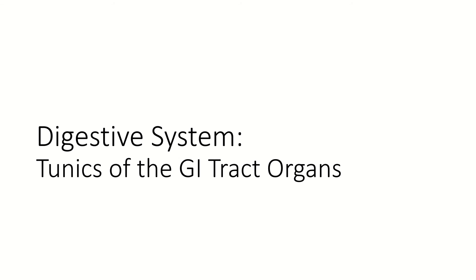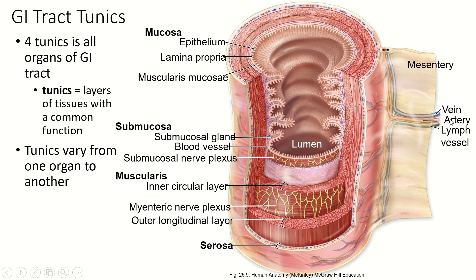We've covered some of the basic anatomy of the digestive system. Now let's look at the histology. We're going to start by talking about things that are common to all of the structures of the GI tract. First of all, all of the gastrointestinal tract organs have four tunics in the walls.